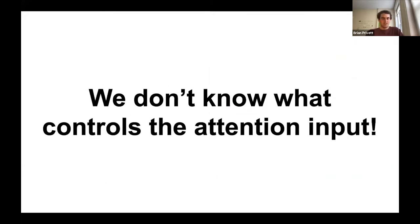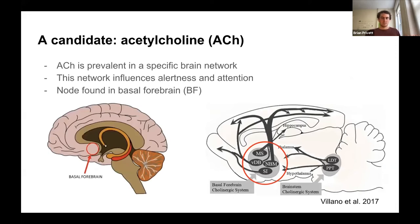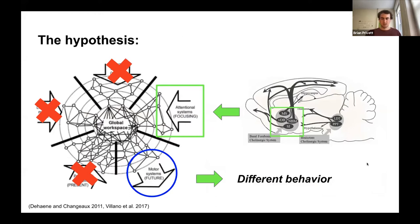We don't know what controls the attention input in this model. However, we do know that acetylcholine is a neurotransmitter that highly relates to attention. It has its own network and influences alertness and attention. In humans, this node of the neurotransmitter that influences attention is found in the basal forebrain. Since we're doing experiments, it's easier to start with mice, which have a correlate of this area as well. So if we look at this basal forebrain area, we can change it, which will influence attentional systems, change the output, give us different behavior, and let us glean insights about the workspace.